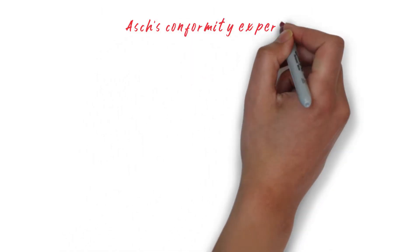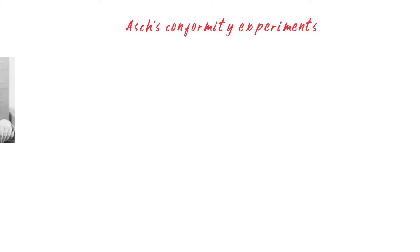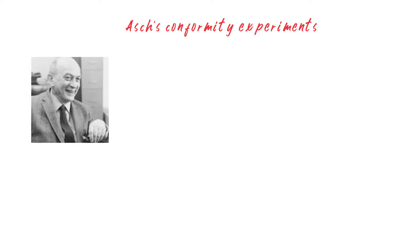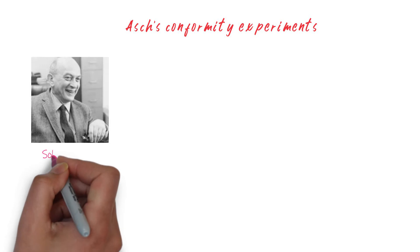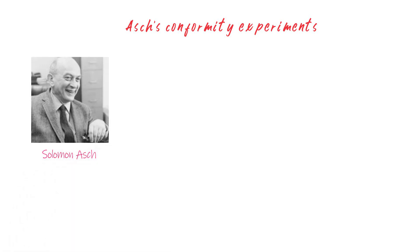In this video we are going to talk about Asch's Conformity Experiments, a series of psychological experiments conducted by Solomon Asch in the 1950s. Solomon wanted to know to which degree a person's own opinions are influenced by those of groups.